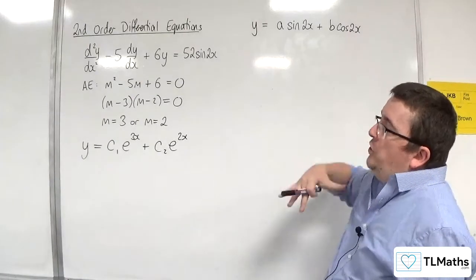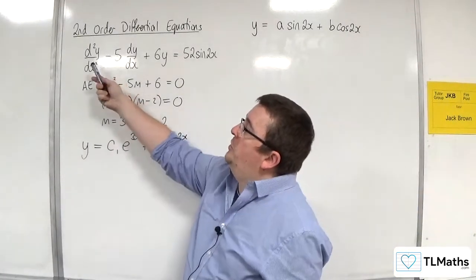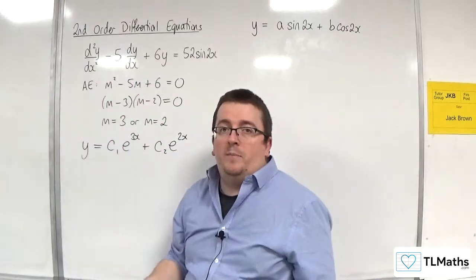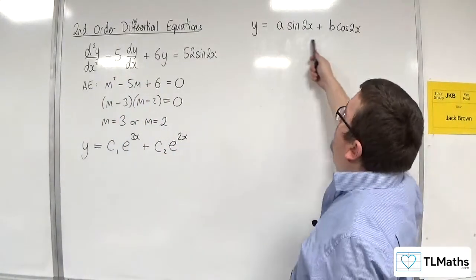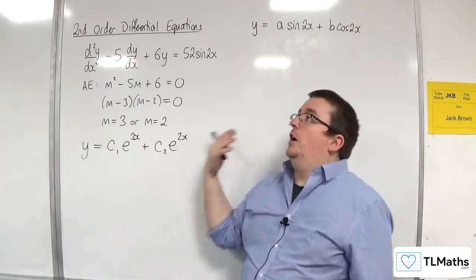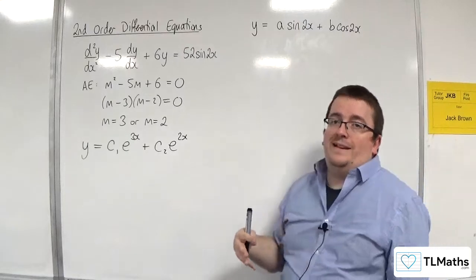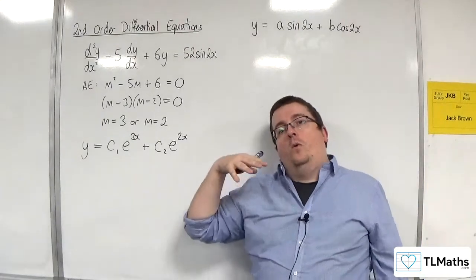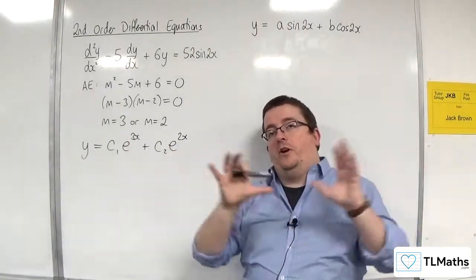Because, as you know from the two previous examples, we substitute in, so we're going to need dy by dx and d2y by dx squared. And as you differentiate these, sine's going to go to cosine. Cosine's going to go to minus sine, etc. So, what happens is that you're going to get a sum of sines and cosines.